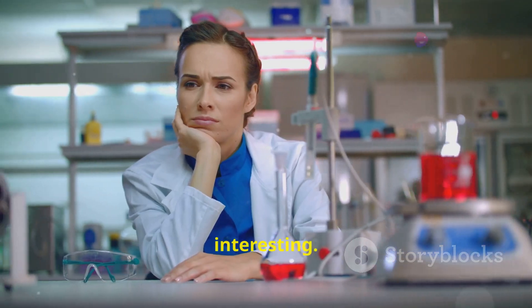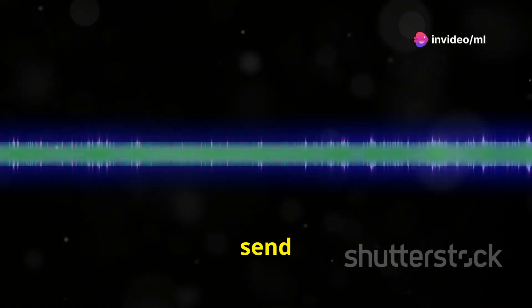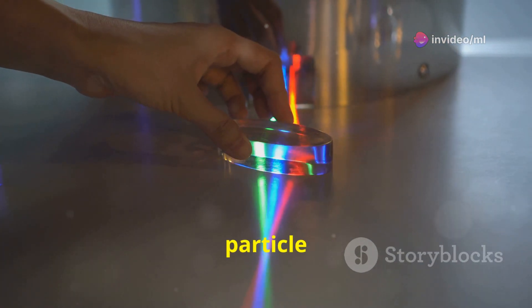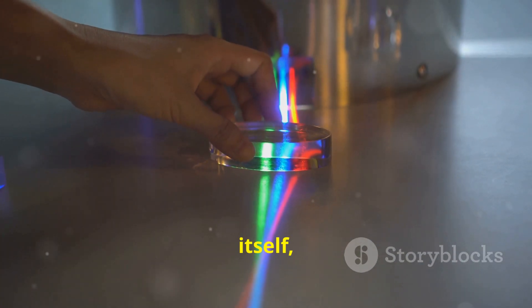But here's where things get really interesting. What happens if we send a single photon at a time through the double slits? Surely, a single particle of light can't interfere with itself, can it?